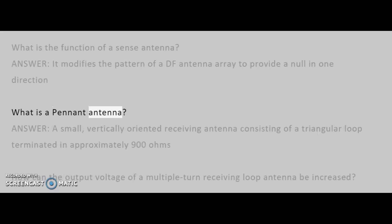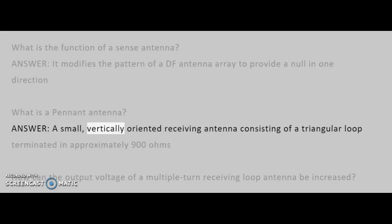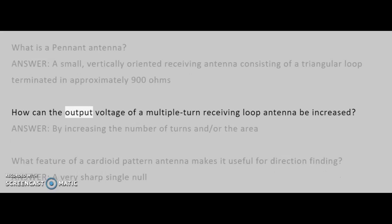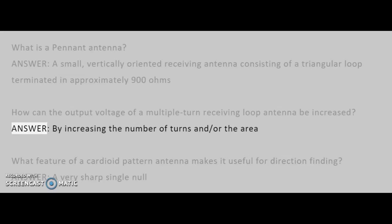What is a pennant antenna? Answer: A small, vertically oriented receiving antenna consisting of a triangular loop terminated in approximately 900 ohms. How can the output voltage of a multiple turn receiving loop antenna be increased? Answer: By increasing the number of turns and/or the area.